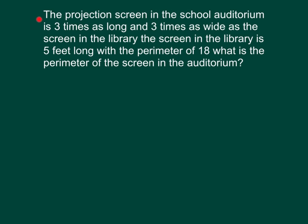Let's read the problem together. The projection screen in the school auditorium is three times as long and three times as wide as the screen in the library. The screen in the library is five feet long with a perimeter of 18 feet. What is the perimeter of the screen in the auditorium?